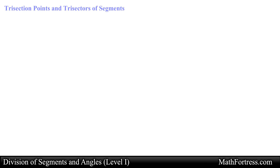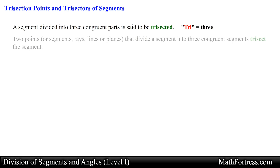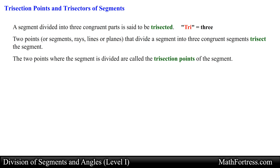Next, let's talk about trisection points and trisectors of segments. A segment divided into three congruent parts is said to be trisected. 'Tri' is a prefix that means three. Two points, or segments, rays, lines, or planes that divide a segment into three congruent segments trisect the segment. The two points where the segment is divided are called the trisection points of the segment. Just as midpoints are associated with segments, trisection points are also associated with segments only.